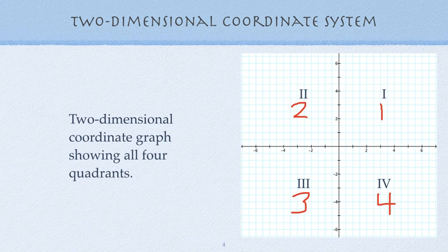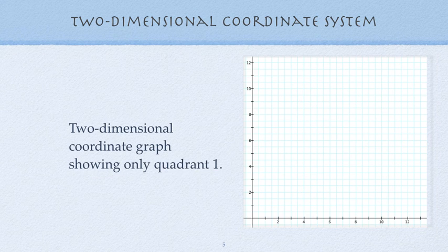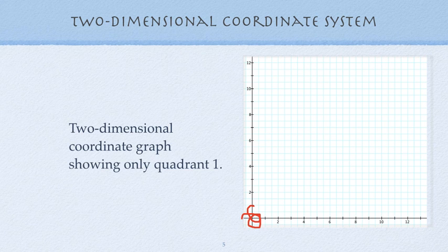Quadrant 1 is the quadrant where both the x-coordinate and y-coordinate are positive, and from there we go counterclockwise. Typically when we're never going to deal with negative x's or negative y's, we only show the quadrant 1 coordinate grid. The origin is right down here, and that's where you start counting from the lower left-hand corner.